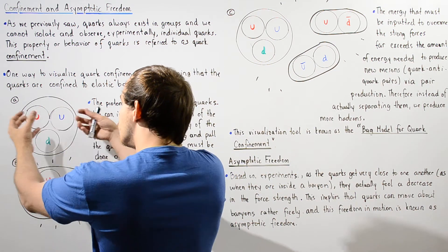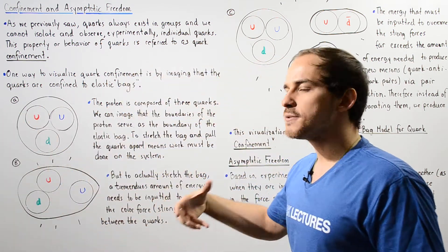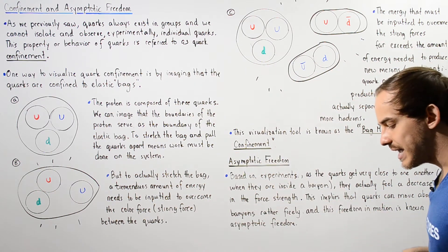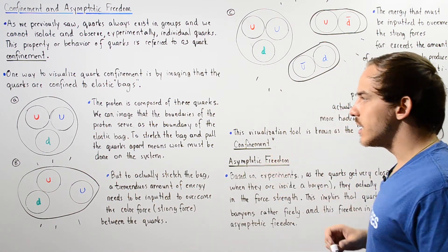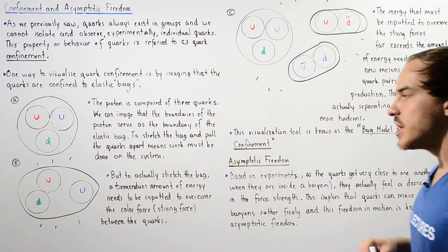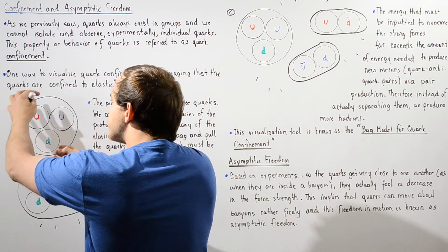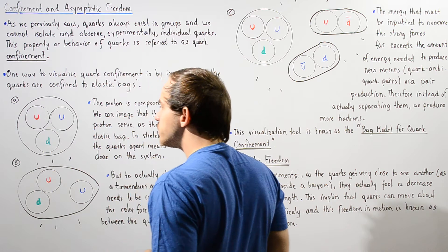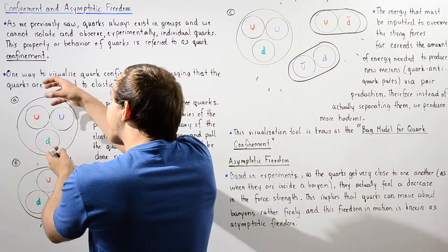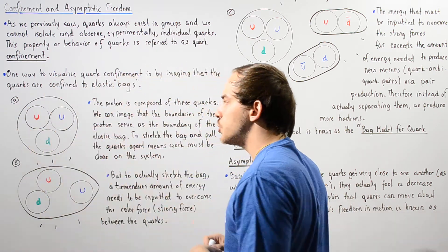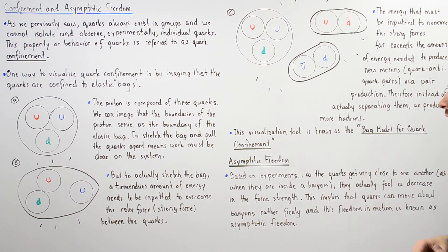Of course, as the quarks begin moving away, that force begins to increase once again. This idea of our quarks being able to actually move within this confined region of the proton with a great amount of freedom in their motion is known as asymptotic freedom.